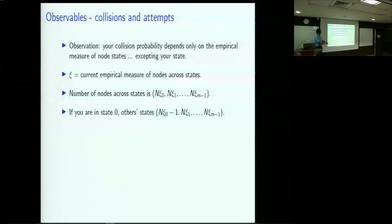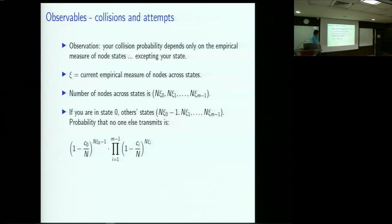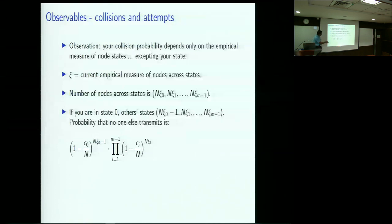If you are in state 0, the other nodes distribution has n*Xi_0 minus 1 nodes in state 0 and n*Xi_1 in state 1, and so on. The probability that no one else transmits in this particular slot is the product over all states i of (1 - C_i/n) raised to the power n*Xi_i (with n*Xi_0 - 1 for your own state). As n becomes large, you can pass to the limit: 1 minus C_i/n raised to n*Xi_i becomes e to the minus C_i times Xi_i. So the probability that no one else is transmitting is e to the minus the inner product of C and Xi.